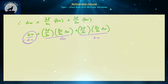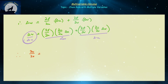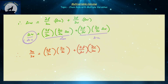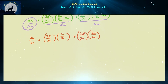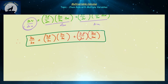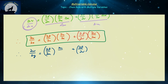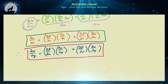Once we clean that up and send delta W and delta X to zero to get the exact partial, we have: ∂W/∂X = (∂F/∂U)(∂U/∂X) + (∂F/∂V)(∂V/∂X). This is our typical structure for the chain rule with respect to X. Similarly, the chain rule with respect to Y is: ∂W/∂Y = (∂F/∂U)(∂U/∂Y) + (∂F/∂V)(∂V/∂Y). Those are the chain rules for partials in the X and Y directions.